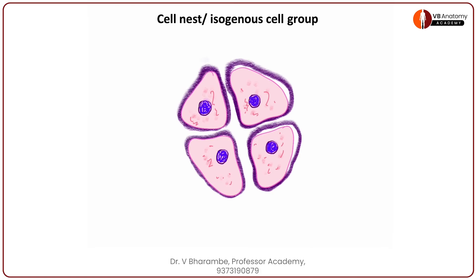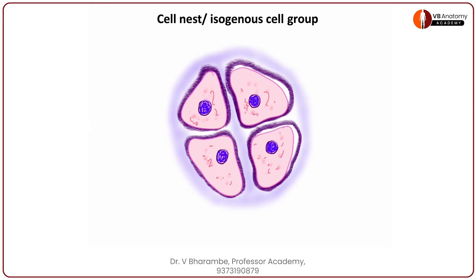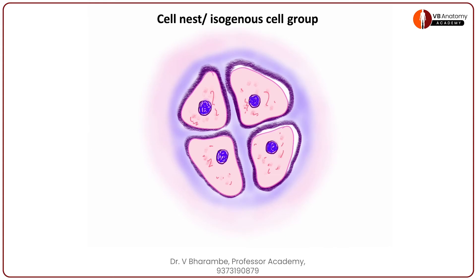This immediately darker colored area is called the capsular matrix. Darken it up. Now let us stain the ground substance around it. This is called the territorial matrix — immediately around the chondrocytes, the ground substance stains dark. Add a lighter stain around this, which is called the inter-territorial matrix. So now you have drawn the chondrocytes, the capsular matrix, the territorial matrix, and the inter-territorial matrix.